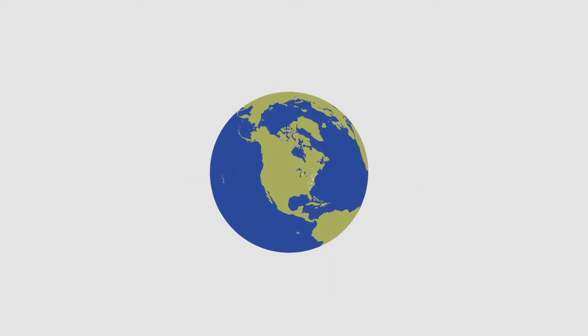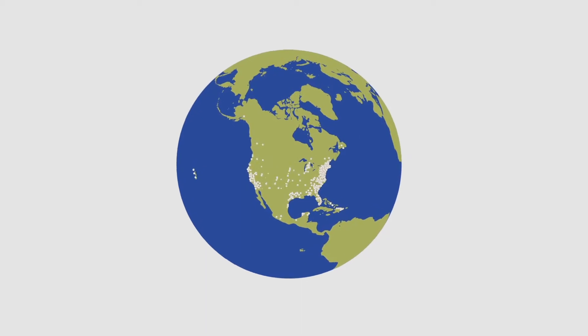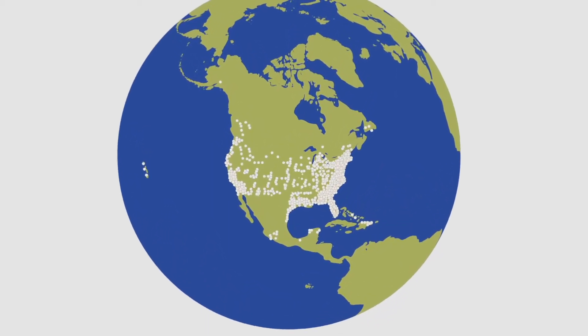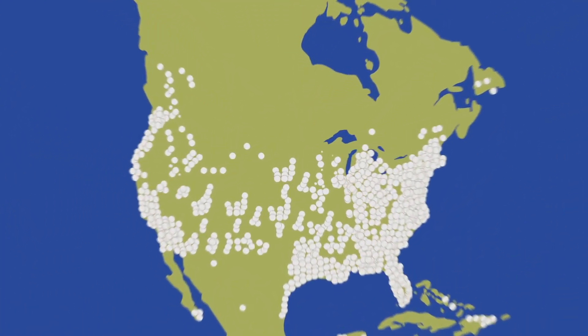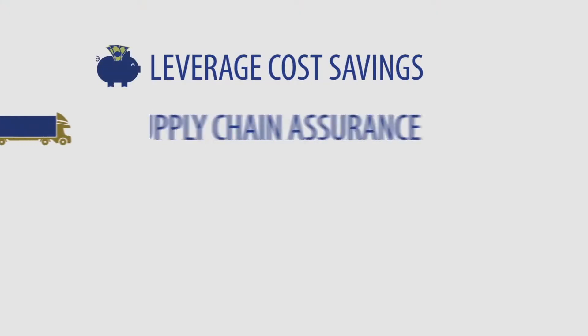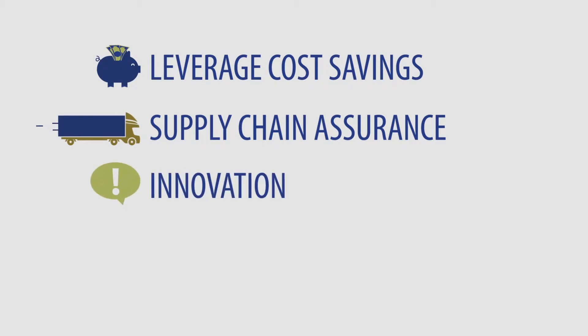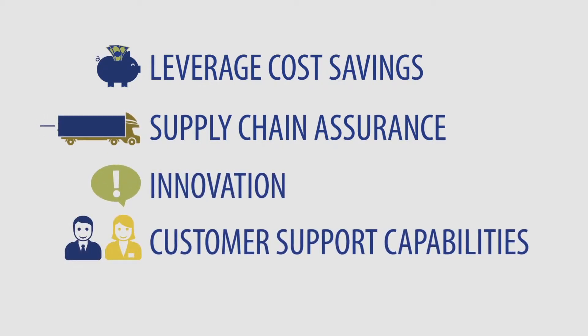Evendra delivers world-class supply chain services to over 5,000 hospitality businesses. Our customers are able to better serve their guests by utilizing our cost savings, supply chain assurance, innovation, and customer support capabilities.